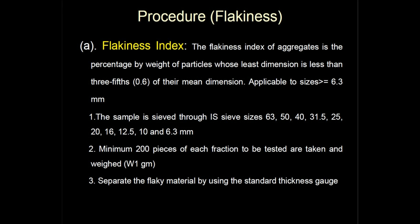We take a minimum of 200 pieces from each fraction to be tested. These are taken and weighed, and the weight is called W. Then we separate the flaky material using the standard thickness gauge. The amount of flaky material passing the gauge is weighed to an accuracy of at least 0.1% of the weight of the test sample.